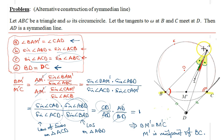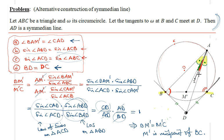Since AM' is the median and by construction we reflected AD across the angle bisector to get AM', it implies that this construction truly provides the symmedian. This is an alternative construction of the symmedian line. In the next video I will show an alternative proof of this fact.